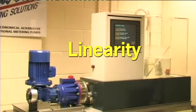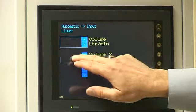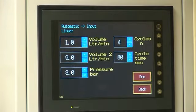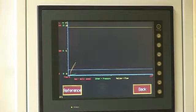The linearity performance of the Hydrocell is demonstrated by this test, whereby the VSD motor is set to increase in speed in a linear fashion, with flow rate increasing from 1 litre per minute to 9 litres per minute. 1 litre per minute is achieved by a motor speed of 50 rpm.